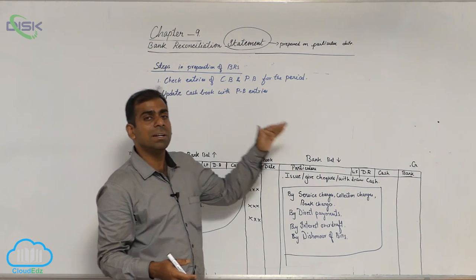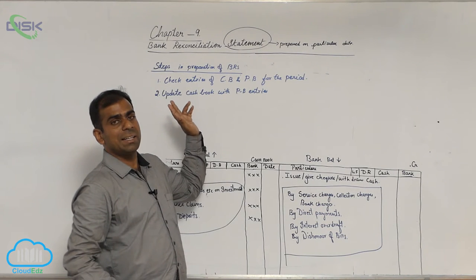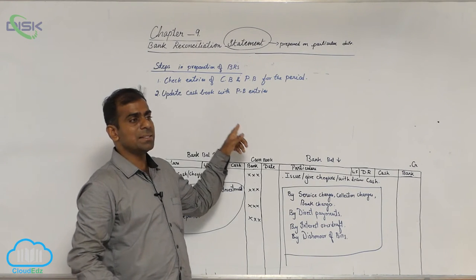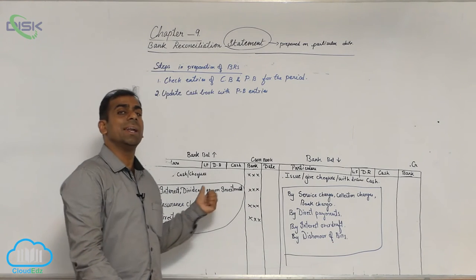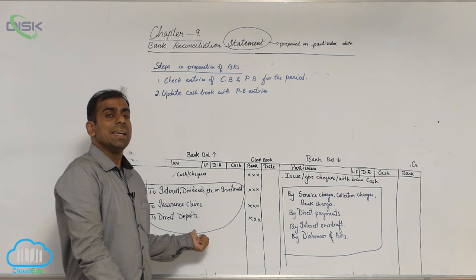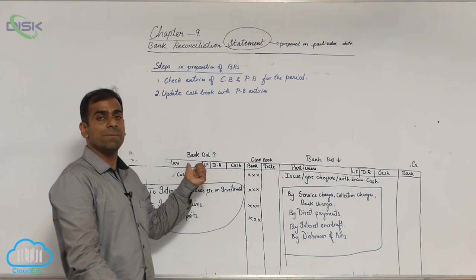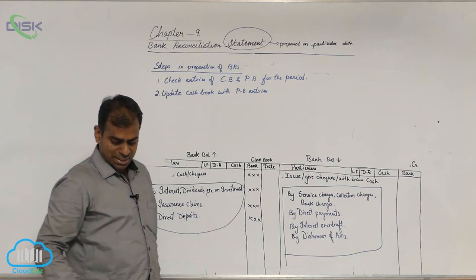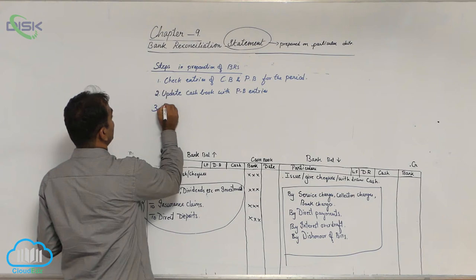So such things you have to record it in your cashbook. If that entry is resulting in the decrease of your bank balance, you record it on the credit side of cashbook. If a particular entry is resulting in the increase of your bank balance, you record it on the debit side of your cashbook. Then next, third step is prepare BRS.